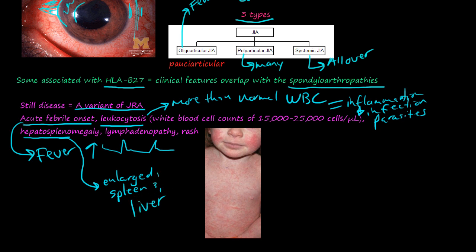And then there's lymphadenopathy. Lymph refers to lymph, adeno is gland, and -pathy is some kind of pathological process. So lymphadenopathy means the lymph nodes or lymph tissue are inflamed or undergoing some pathological change. Here I have a picture of a child with Still's disease — you might be able to palpate some enlarged lymph nodes in the neck. You can also see a rash on her cheeks, all over her torso and stomach, and even on her arms.